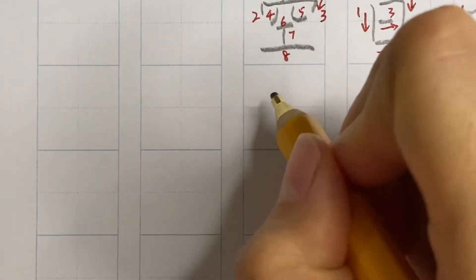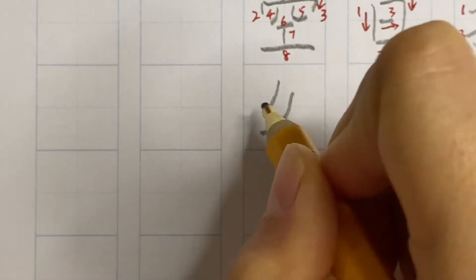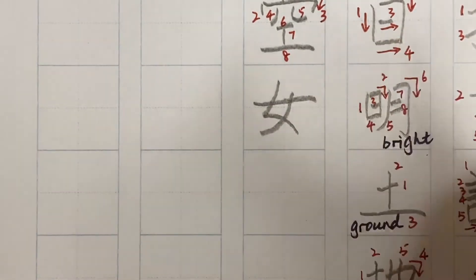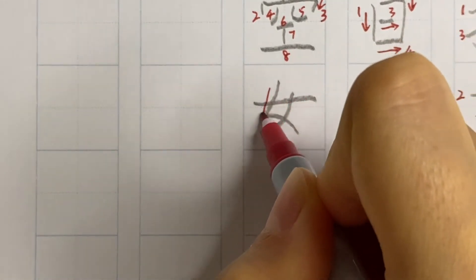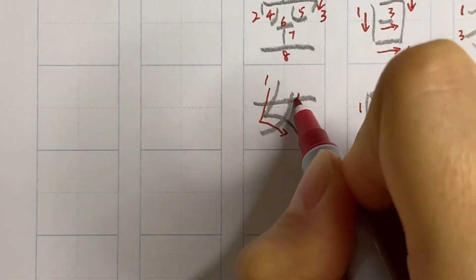We start from drawing a pointy bracket, and then a slanted stroke, and then a horizontal stroke. It looks like a curvy and dancing person. Just be careful of the balance of this component in the box.